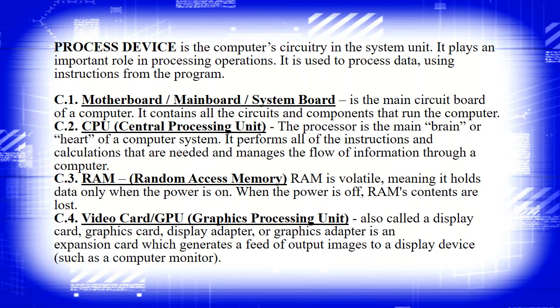First, the motherboard — also called main board or system board — is the main circuit board of a computer. It contains all the circuits and components that run on the computer. Next, the CPU or central processing unit is the main brain or heart of the computer system. It performs all of the instructions and calculations needed and manages the flow of information through a computer.